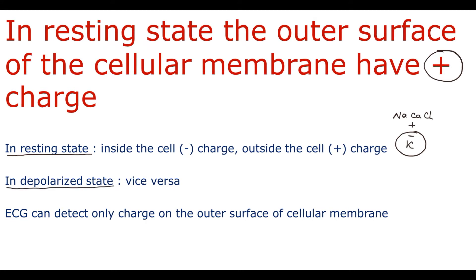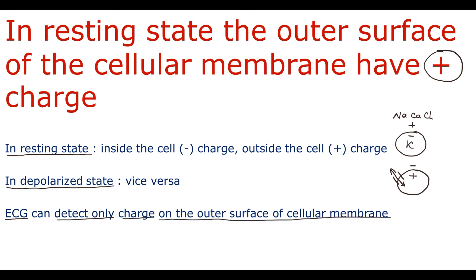In depolarized state the charges are completely opposite — inside the cell charge becomes positive and outside the cell on the outer surface of the membrane charge becomes negative. These changes are caused by movement of ions due to the opening of ion channels. The key principle in ECG is that ECG can detect only the charge on the outer surface of the cell membrane, so ECG registers the charge and changes in charge only outside the cell.